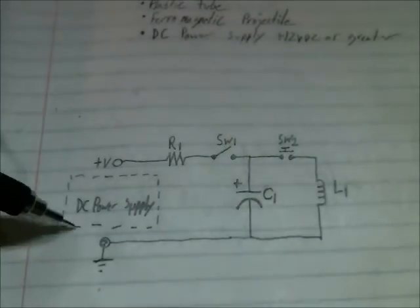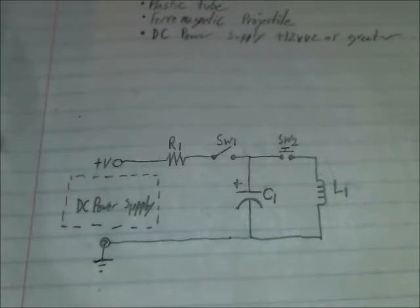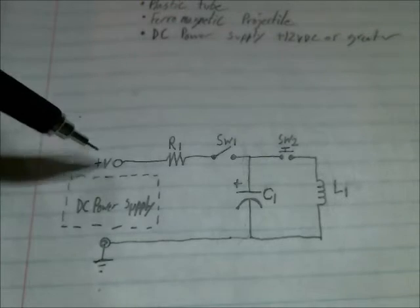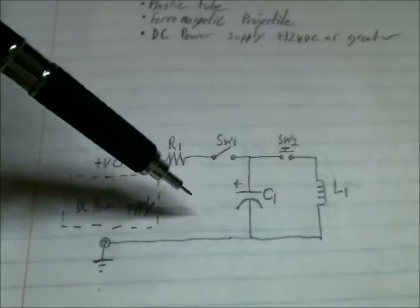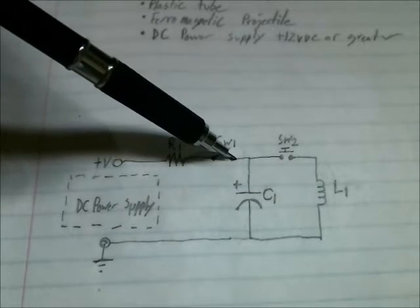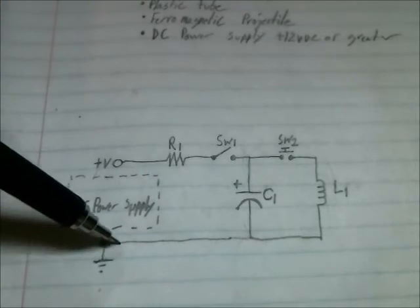So here's the circuit. Your DC power supply is here, this is the positive, this is the ground. You would go from the DC power supply through your resistor to your on-off switch. And then from that side of the on-off switch you would go through the capacitor and back to the DC power supply.